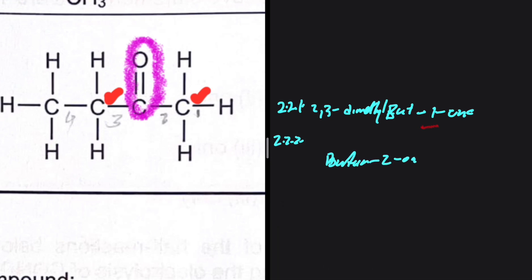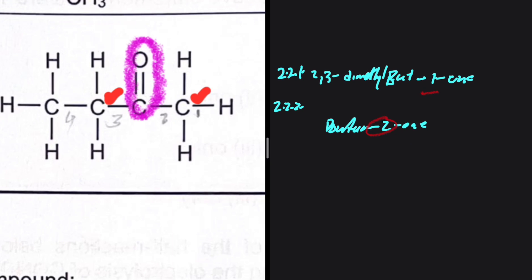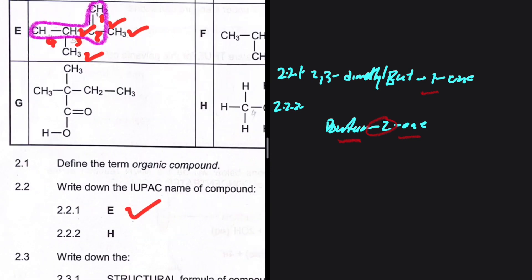The name is butan-2-one. Even if you don't include the '2' it would still be correct, because with four carbons on a straight chain as a ketone, the oxygen must be on the second carbon — otherwise it would be an aldehyde. So butan-2-one is the answer for 2.2.2.